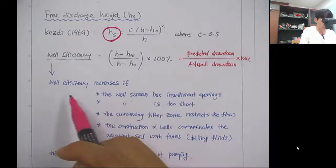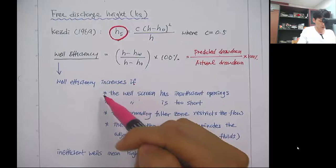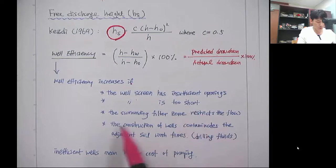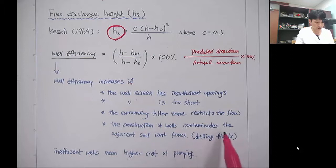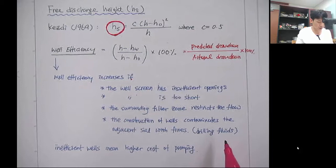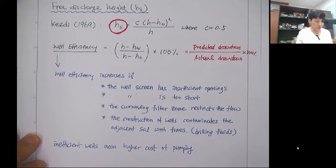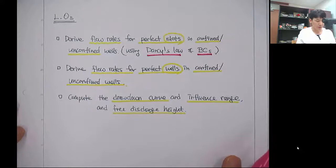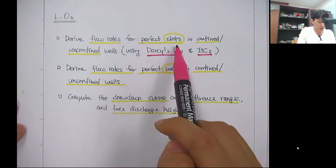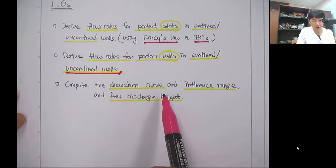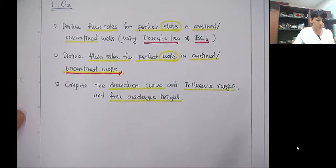Well efficiency decreases when the well screen has insufficient openings, the well screen is too short, the surrounding filter zone restricts flow, or construction contaminates the soil with fines such as drilling fluid. Inefficient wells require higher pumping costs. To wrap up, we have derived flow rates for perfect slots in confined and unconfined aquifers and for perfect wells, and we have seen how to compute the drawdown curve, influence range, and pre-discharge height using empirical equations.